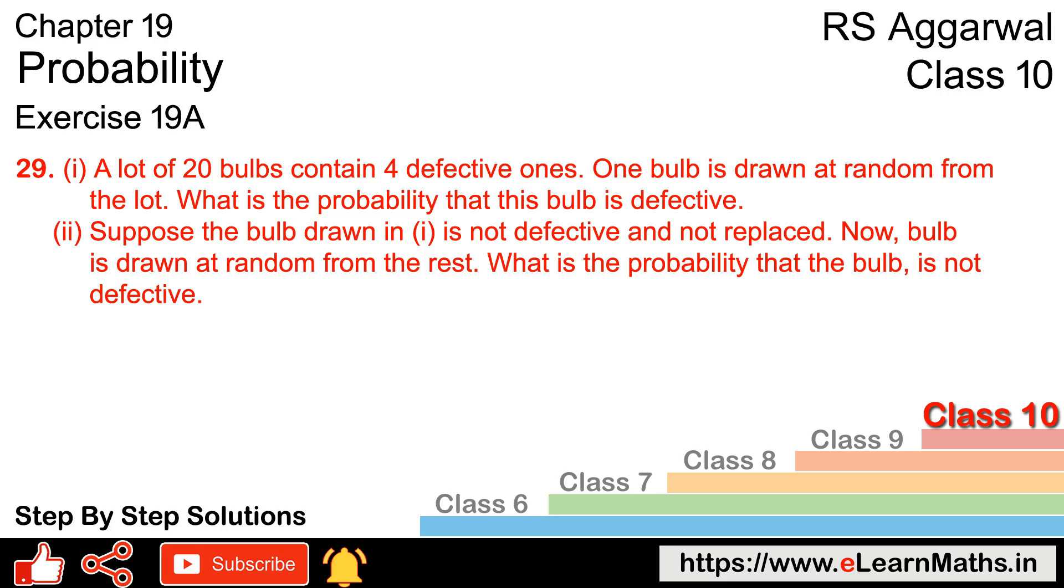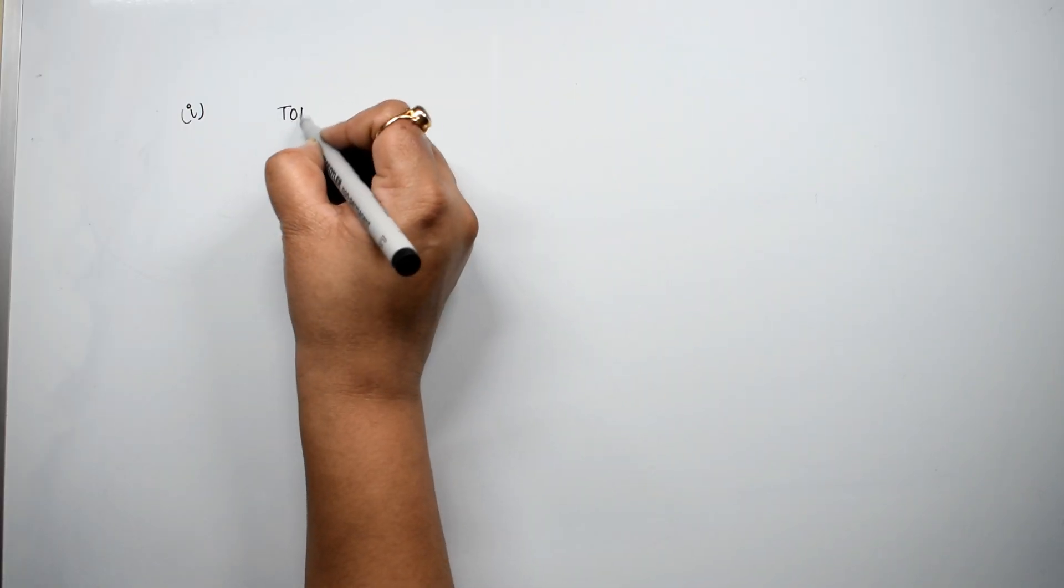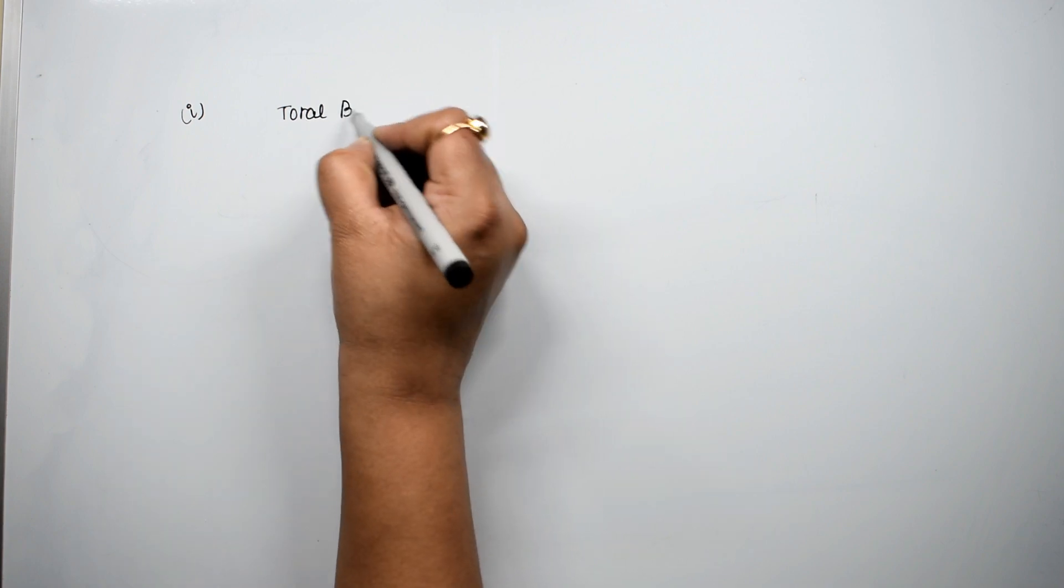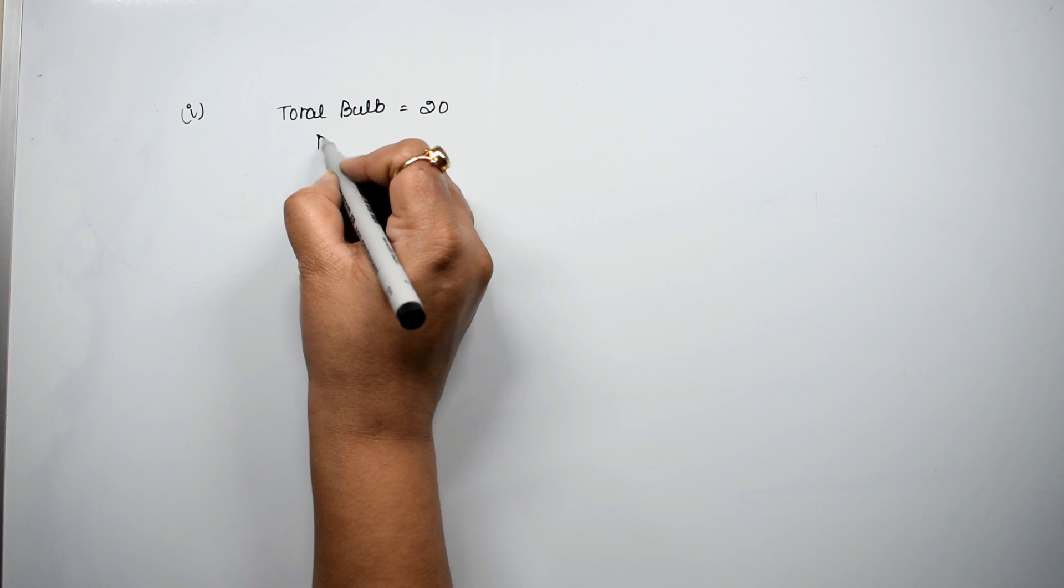Let's do question number 29 of exercise 19A, that is probability. Question number 29, first part. A lot of 20 bulbs contain 4 defective ones, meaning we have a lot in which total bulbs given are 20, and defective bulbs given are 4.